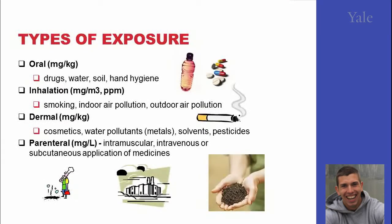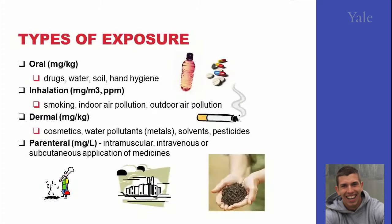Some substances will be absorbed to the skin, and some won't. Some substances will get into your digestive tract, and some won't. Therefore, the route of exposure is very important. Parenteral exposure is a specific case because it bypasses your natural defense mechanisms — such as skin, lungs, and digestive tract — and injects the substance directly into your bloodstream, therefore making it available to your body faster.